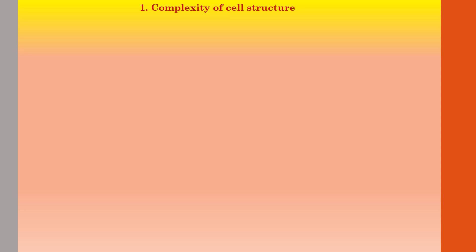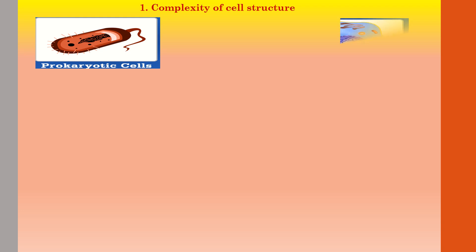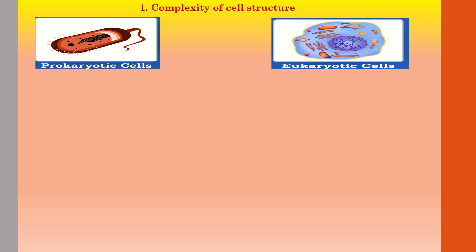The first criteria is complexity of cell structure. Based on complexity, living organisms are classified into prokaryotic cells and eukaryotic cells. Prokaryotic cells are underdeveloped cells — they have few organelles, no well-defined nucleus, and are mostly unicellular. Whereas eukaryotic cells are highly developed cells with a well-defined nucleus and most cell organelles present.